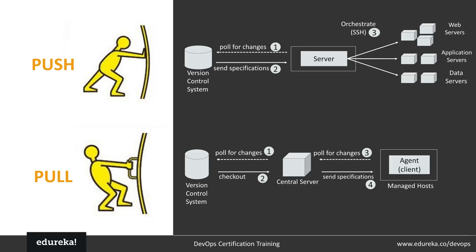In a push-based configuration management system, as shown on screen, a version control system manages changes in the code base, a main server has the configuration management tool installed, and a bunch of nodes — web servers, application servers, and database servers — are all connected via SSH. The main server constantly pulls the version control system for code changes and decides how to apply those configurations, then pushes them all at once to the node machines.